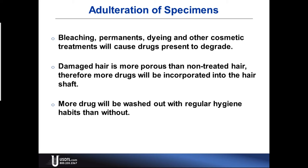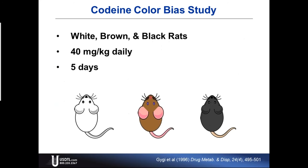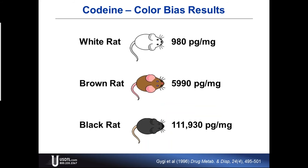Hair color is one of the biggest variables in hair testing. Here's some data from the literature — this study from 1996 gave codeine to white, brown, and black rats at 40 milligrams per kilogram on a daily basis for five days, then sampled the hair from each and tested for codeine. The white rats had 980 picograms per kilogram, the brown rats had 5,900, and the black rats had 111,000 picograms per kilogram of codeine in their hair.